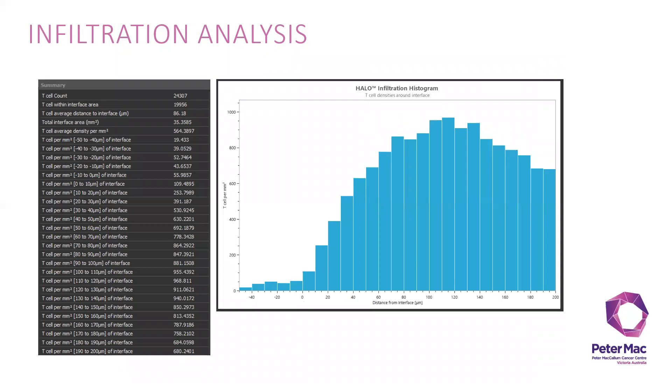From here, it will show you the infiltration histogram as well. You can see it is higher on average around 120 microns further from the tumor.